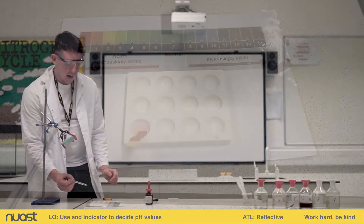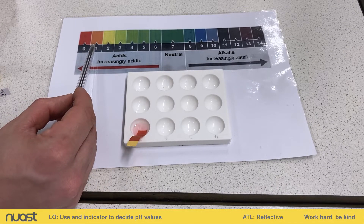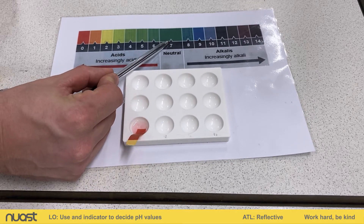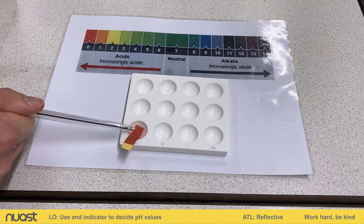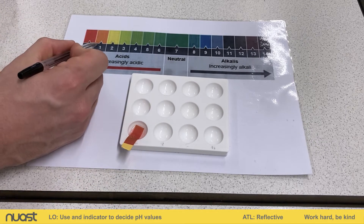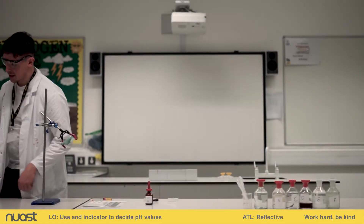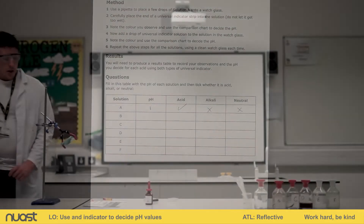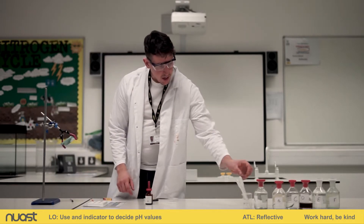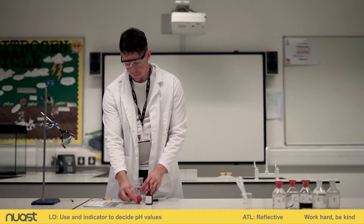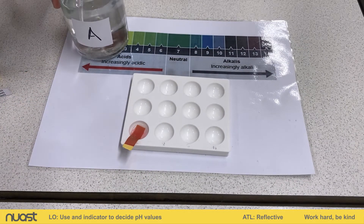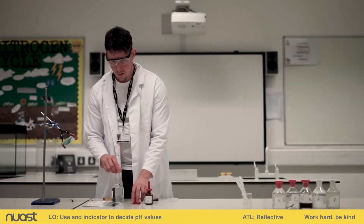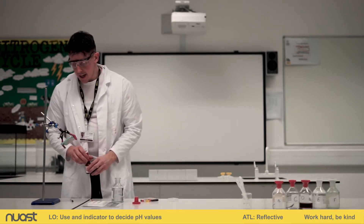We can then identify how strong the acid is. Looking at the scale, we've got orange, red, yellow and gradual colours until we get to neutral, which would be green. Our universal indicator paper is showing this as orangey-red, so somewhere between zero and one. I'm going to suggest this is a pH of one. We're now going to use the same solution but this time using universal indicator solution.